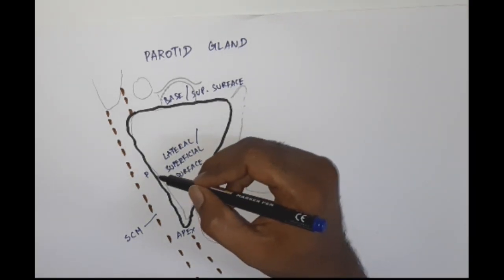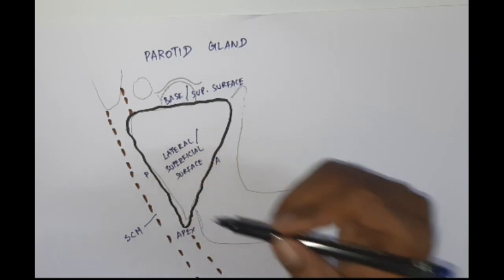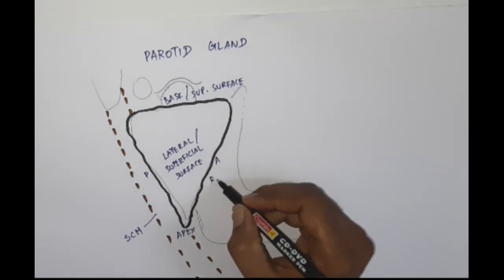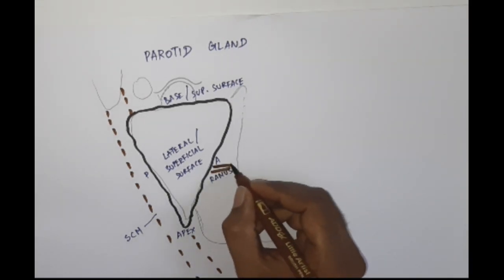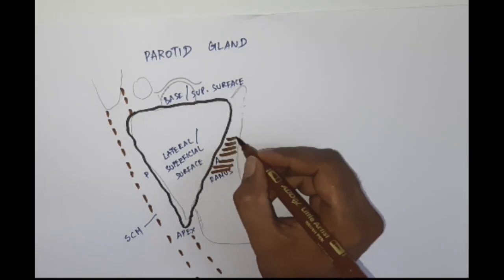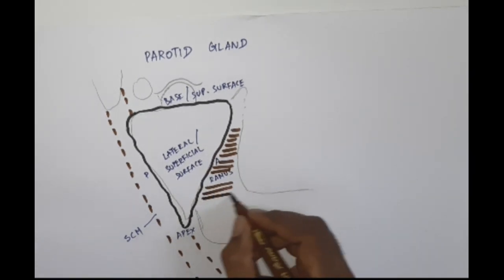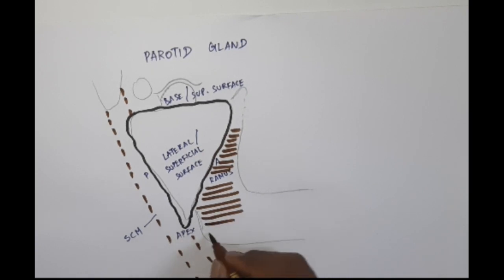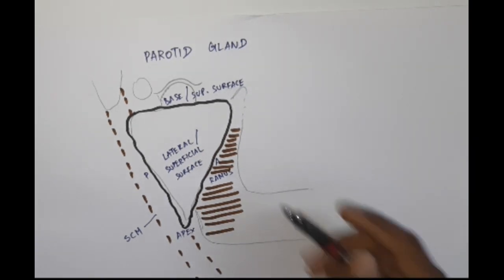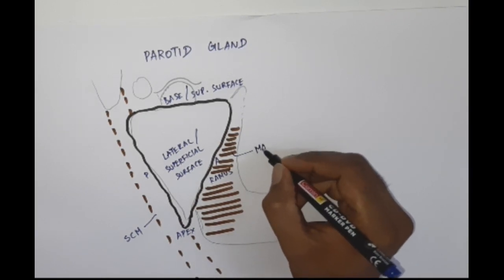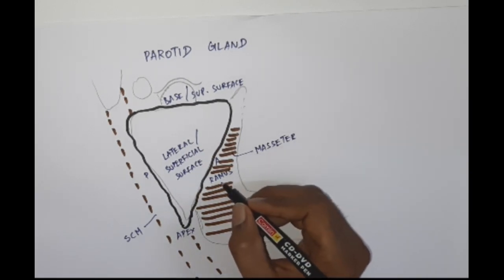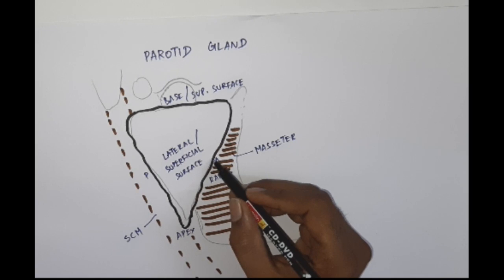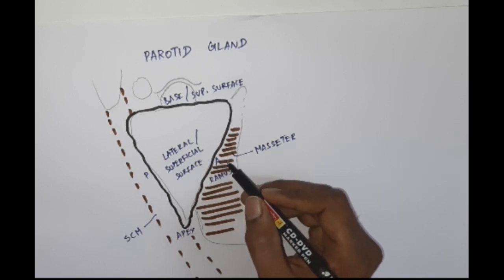The posterior border is actually overlapping the sternocleidomastoid muscle. The anterior border is actually overlapping not the ramus itself, but the muscle present over the ramus. The name of the muscle over the ramus of the mandible is called the masseter. The masseter is inserted into the ramus of the mandible, and the anterior border of the parotid gland overlaps the masseter muscle.